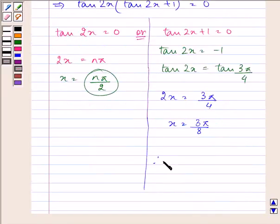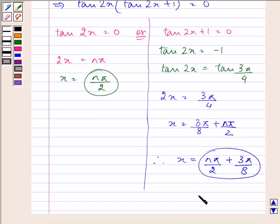Therefore, the value of x comes out to be, putting it into the general form, nπ/2 + 3π/8, where we also have n from before. This becomes the second general solution that we can have.